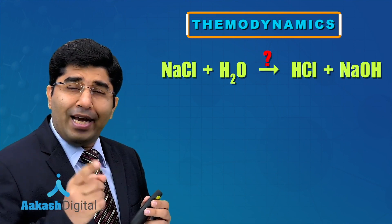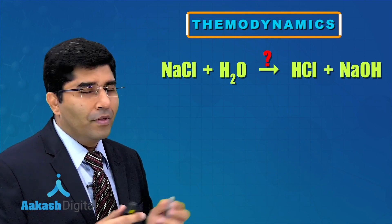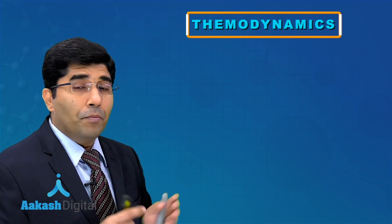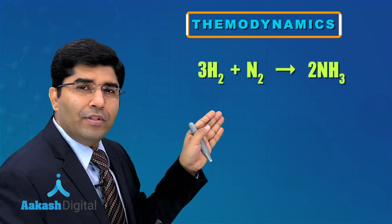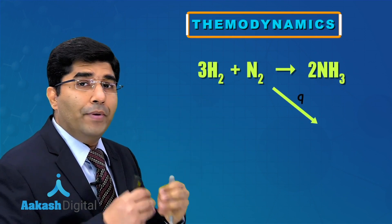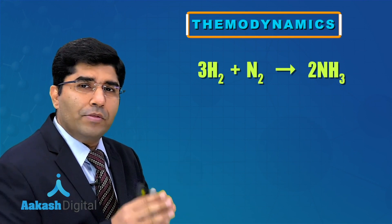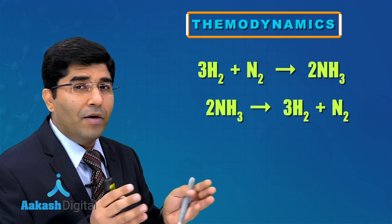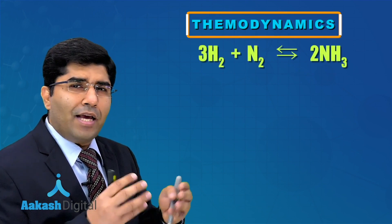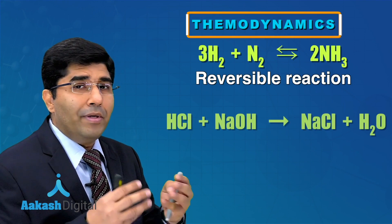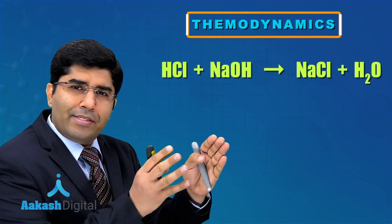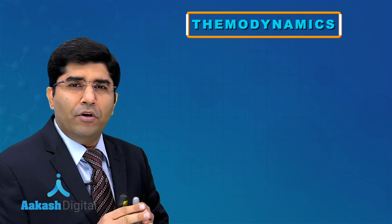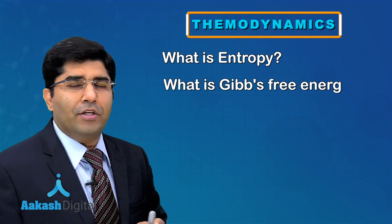When NaOH reacts with HCl it forms NaCl and water. If we dissolve NaCl in water, we do not get HCl and NaOH back because the reverse reaction is not possible. However, when hydrogen reacts with nitrogen it forms ammonia and liberates heat, and when we give heat to ammonia it decomposes back into hydrogen and nitrogen. So some reactions are reversible, some are irreversible.